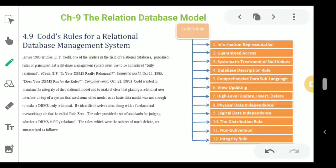Welcome to the online tutorial session. Today we will start Chapter 9, the Relational Database Model. We will learn about Codd's Rules for the Relational Database Management System. Almost all present-day database implementations are based on the relational model, developed and published by E.F. Codd in 1970. It is a useful model derived from the theory of relational algebra. No commercial relational database fully conforms to all of Codd's 12 rules, but we still follow them to make a proper relational database.